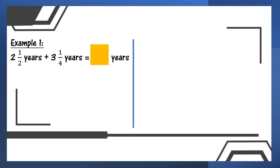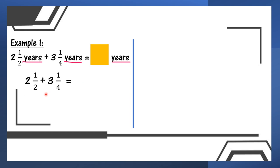Let's look at example one: 2 and 1/2 years plus 3 and 1/4 years, equal to the answer in years also. So for this question, all the units are the same — semua unitnya sama. Jawapan nak dalam tahun, years juga. So kita tak perlu tukar unit. We just add up like this.